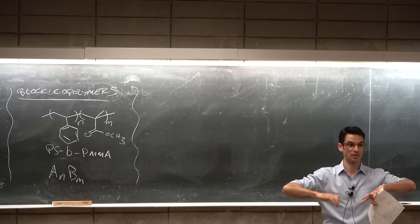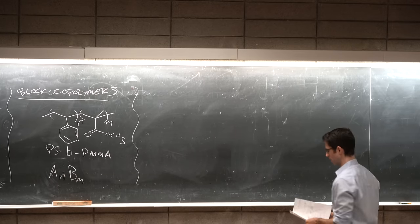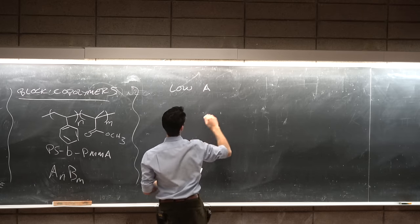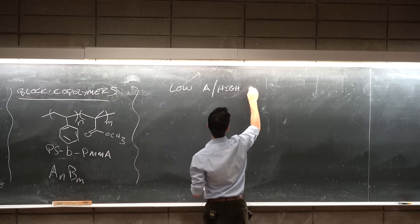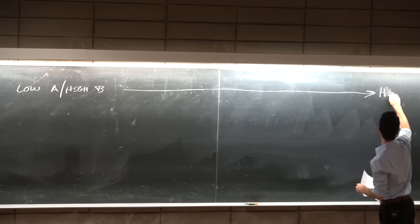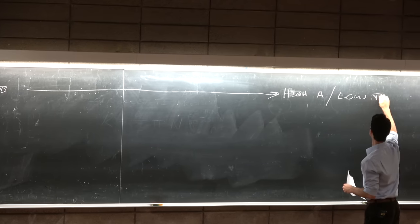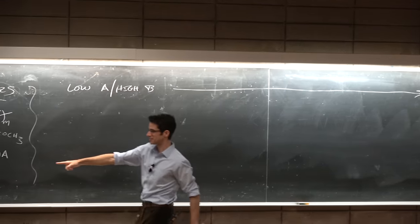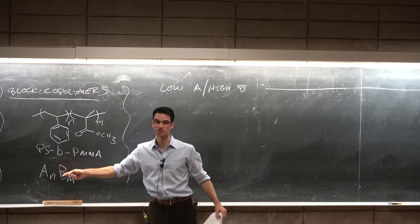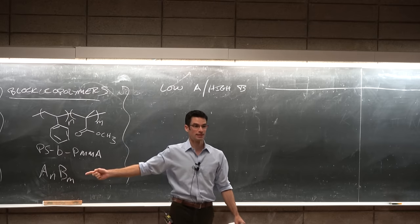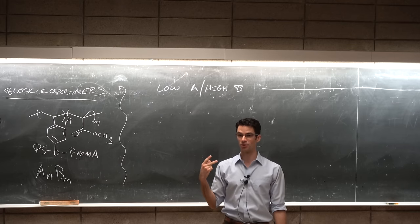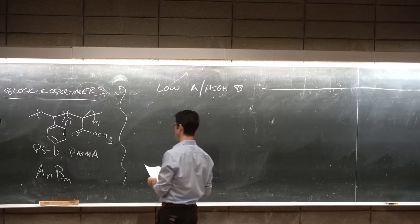And typically how we write this is A sub N, B sub M. And these phase separate to form nanoscopic patterns that have a surprising degree of regularity. Now what it requires is that both polymers are pretty flexible. And what they do is they self assemble into structures. So from low A, high B content all the way to high A, low B.